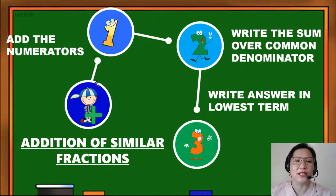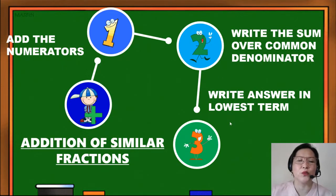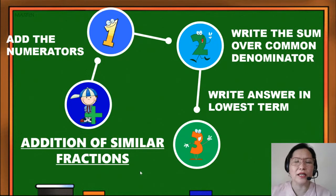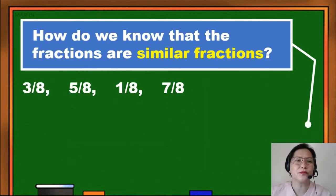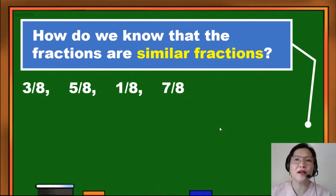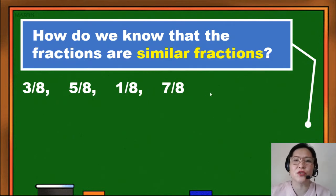These are the three steps that we are going to follow as we add similar fractions. But before that, I have a question. How do we know that the fractions are similar fractions?